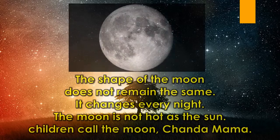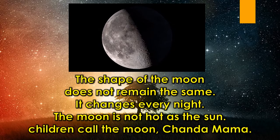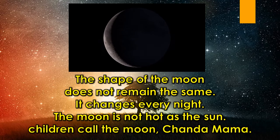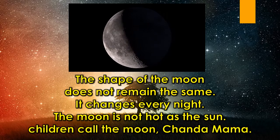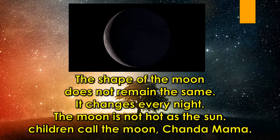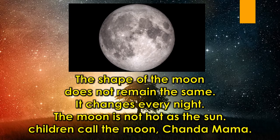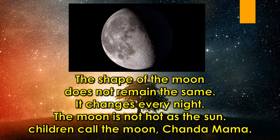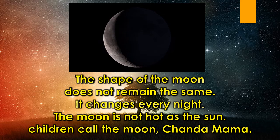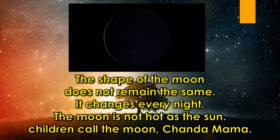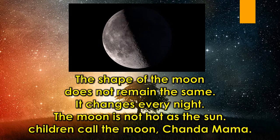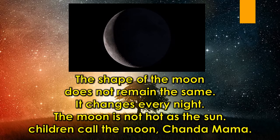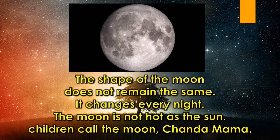Now children, let us learn about the shape of the moon. Do you know the shape of the moon does not remain the same? It changes every night. The moon is not as hot as the sun, and children call the moon Chanda Mama. When the moon shines, it is not always round — sometimes we see the quarter moon, sometimes the full moon, or sometimes the new moon. So the shape of the moon does not remain the same; it changes every night.